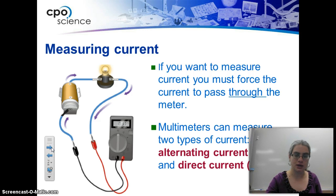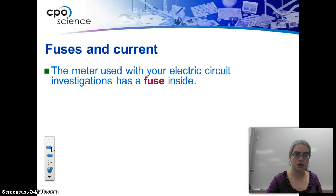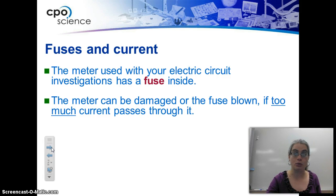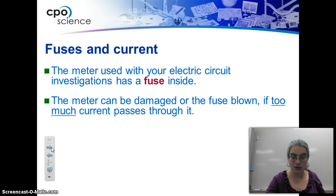We have alternating and direct current; most things use alternating current now. Fuses act like a resistor — they prevent too much current from flowing through. When lightning strikes your house, there's so much current that the fuse box blows to protect the electric circuitry: it opens the circuit so current can't pass through, saving your appliances and probably your house.